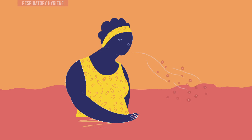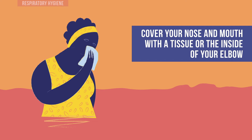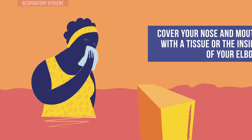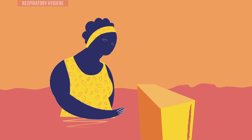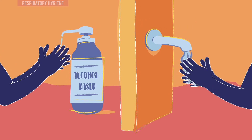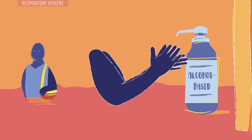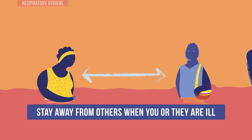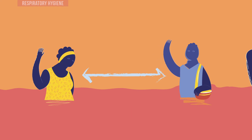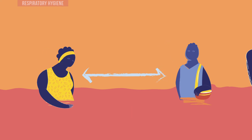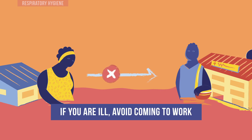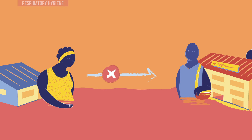Respiratory hygiene helps to reduce the spread of microorganisms that can cause respiratory infections. When you cough or sneeze, cover your nose and mouth either with a tissue or with the inside of your elbow. Right after you cough or sneeze, throw away any tissue used into a closed bin and always perform hand hygiene. Respiratory hygiene also includes staying away from others as much as possible whenever you or they are ill. Avoid introductory kissing or shaking hands if you are ill or experiencing any symptoms, especially during a respiratory outbreak like COVID-19. You should avoid coming to work and avoid close contact with people who exhibit symptoms.